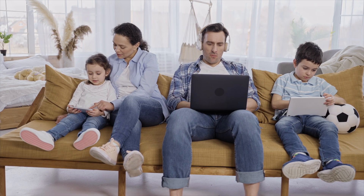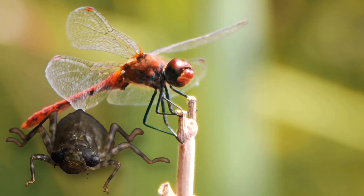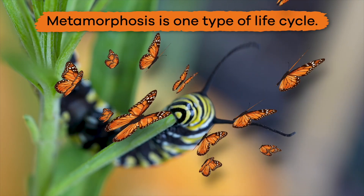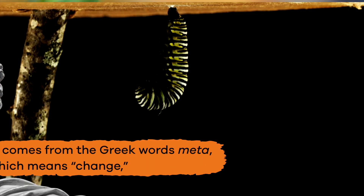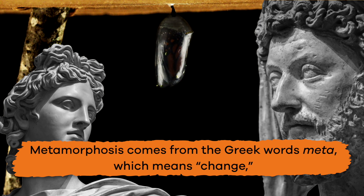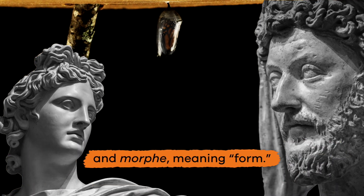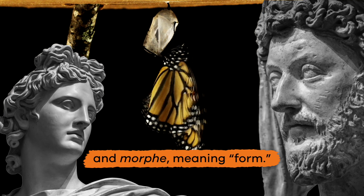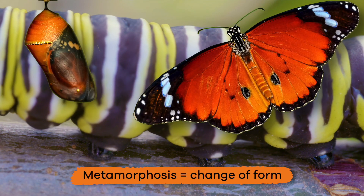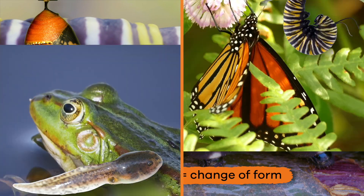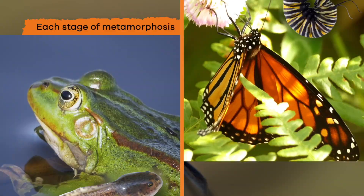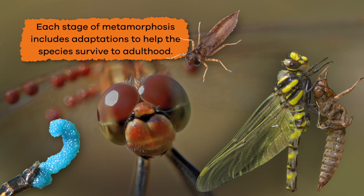but have different traits, and others look much different than their parents. Metamorphosis is one type of life cycle. The word metamorphosis comes from the Greek words 'meta,' which means change, and 'morph,' meaning form. Therefore, the definition of metamorphosis is change of form. If you think of a butterfly or frog, this makes sense.